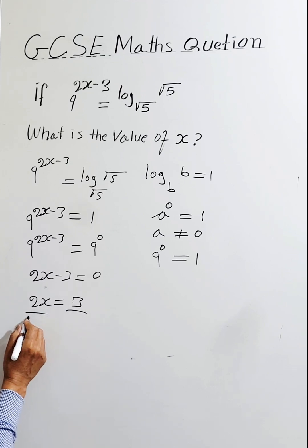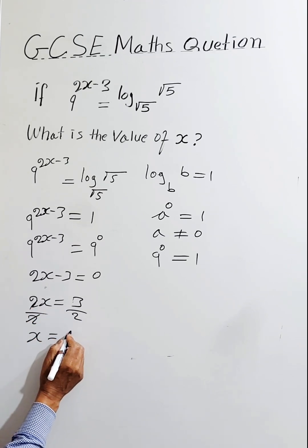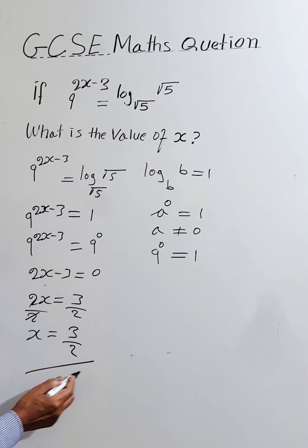Let's divide by 2. This will be x, and this will be 3 over 2. So this is the final answer.